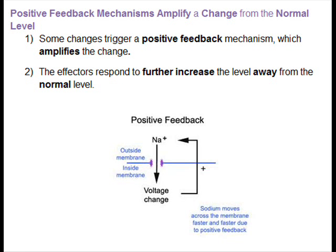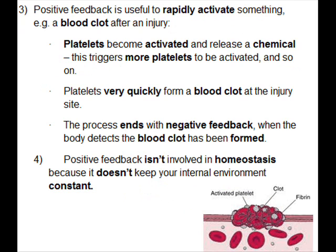Positive feedback mechanisms amplify a change from the normal level. Some changes trigger a positive feedback mechanism which amplifies the change — the effectors respond to further increase the level away from the normal level. Positive feedback is useful to rapidly activate something, for example a blood clot after an injury. Platelets become activated and release a chemical; this triggers more platelets to be activated, and so on, so platelets very quickly form a blood clot at the injury site.